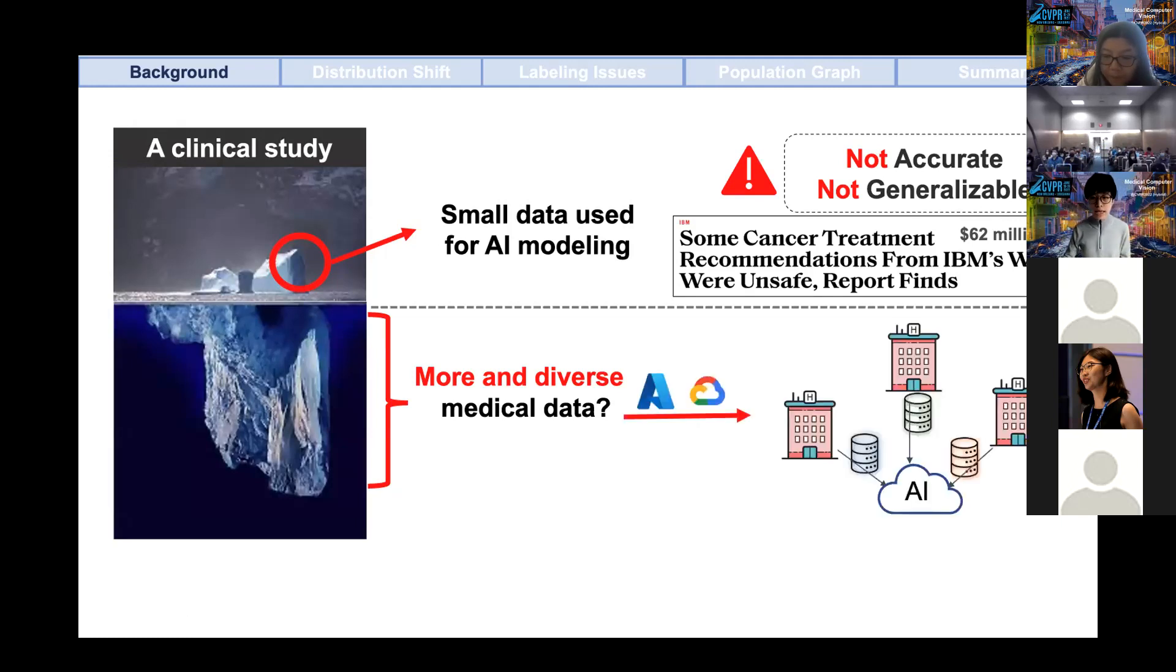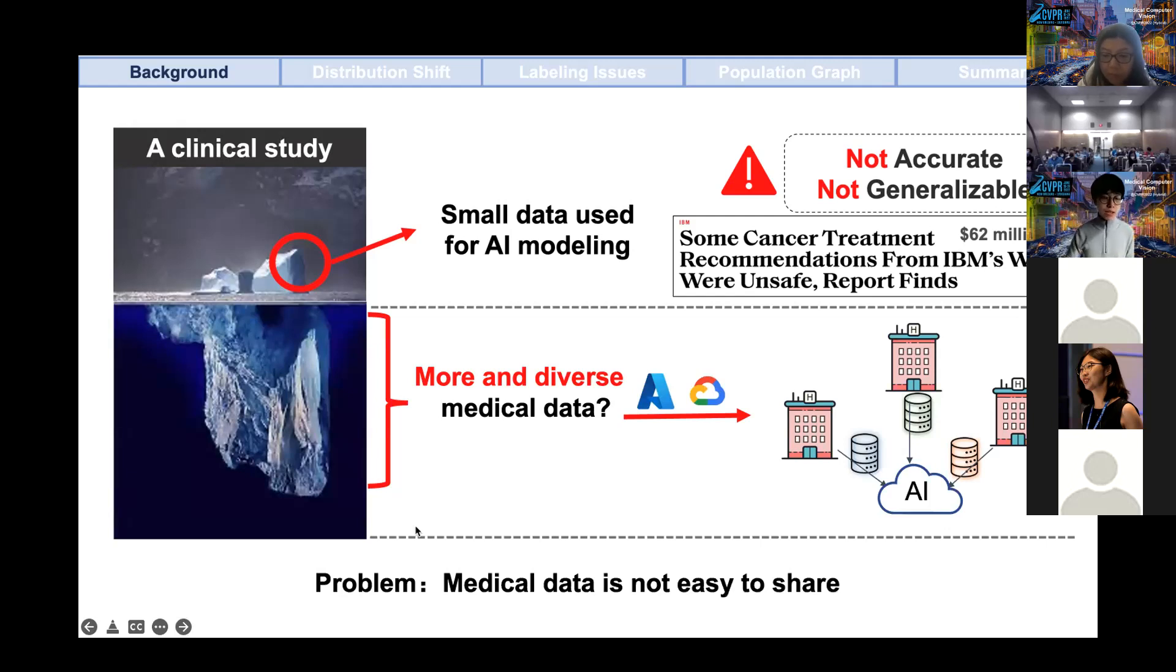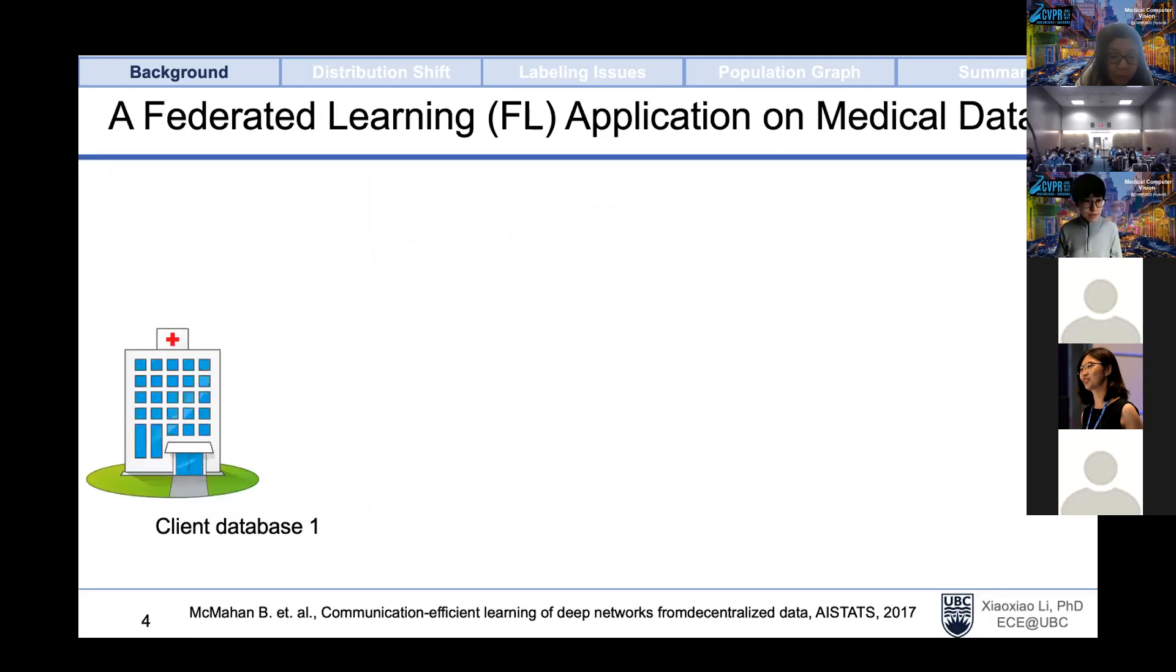The fundamental challenge is the variability of data. One solution to improve AI performance is to use more and diverse medical data. One naive solution is to pull in this data into a cloud server or central server and then train a model in this server. However, we know that medical data is not easy to share due to privacy concerns and many legal regulations.